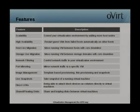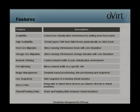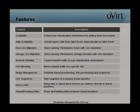oVirt includes support for several file and block storage methods: local storage on the hosts themselves, NFS, iSCSI, Fibre Channel, and POSIX storage such as Gluster. These storage domains provide a means to store disk images for virtual machines, storage for exported virtual machines, and ISO images for installation media. The data storage domains also support copy-on-write and raw formats for creating disk images.